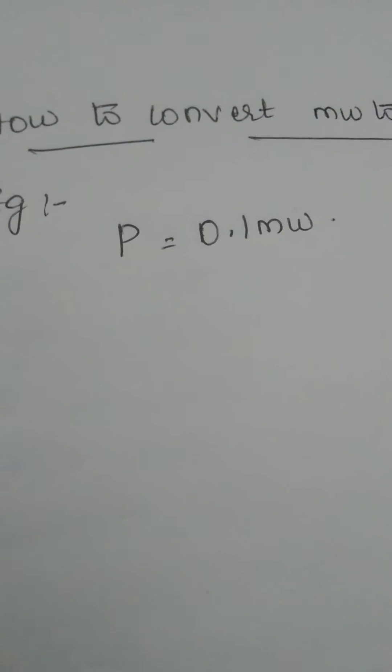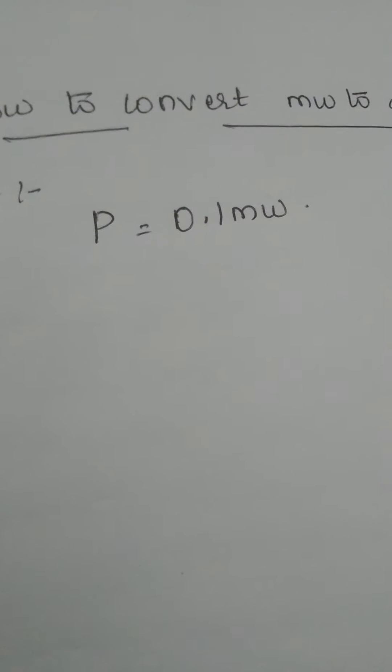For example, if you take P equal to 0.1 milliwatt, this milliwatt should be converted into dBm. How to convert means you have a formula.